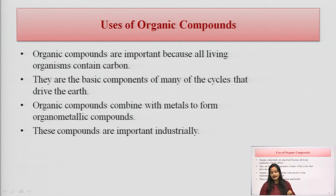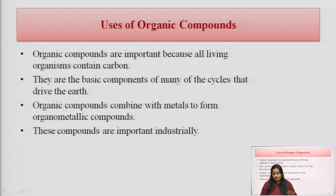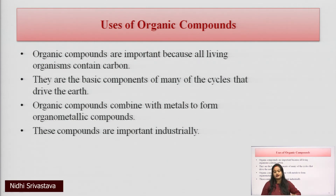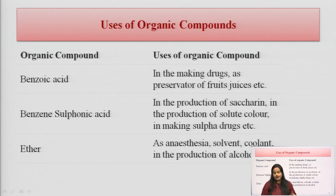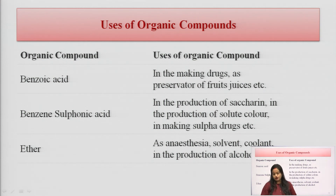Organic compounds are used in many ways. All living organisms contain carbon atoms as the basic component of many cycles that drive the earth. Organic compounds combined with metals form organometallic compounds, which are used in industry. Examples include benzoic acid, used as a preservative; benzoic sulfonic acid, used for production of saccharine; and ether, used as an anesthetic and solvent.